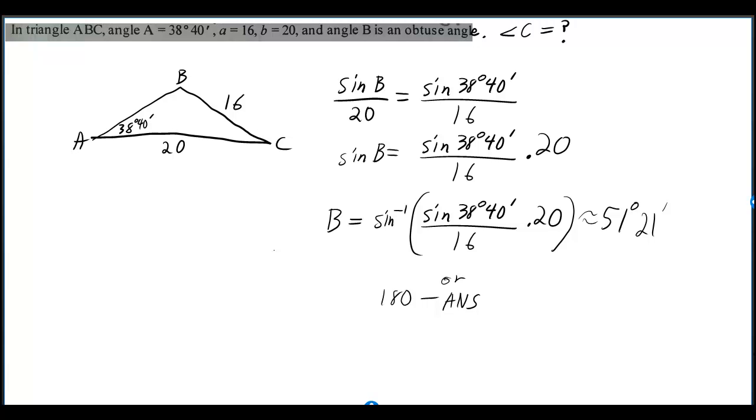In triangle ABC, angle A is 38 degrees 40 minutes, A is 16, B is 20, and angle B is an obtuse angle. What is angle C?